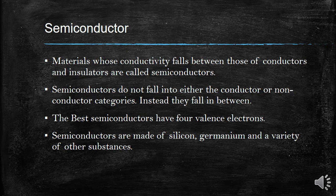The second material is called a semiconductor. The material whose conductivity falls between that of a conductor and an insulator is called a semiconductor. Semiconductors do not fall into either the conductor or non-conductor category. The best semiconductors have four valence electrons.